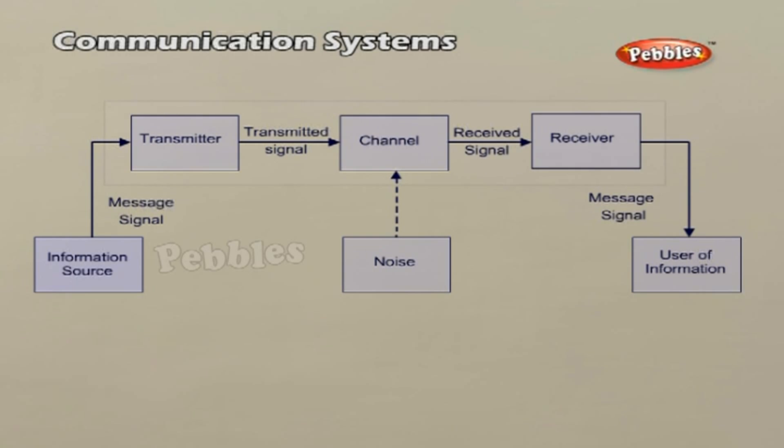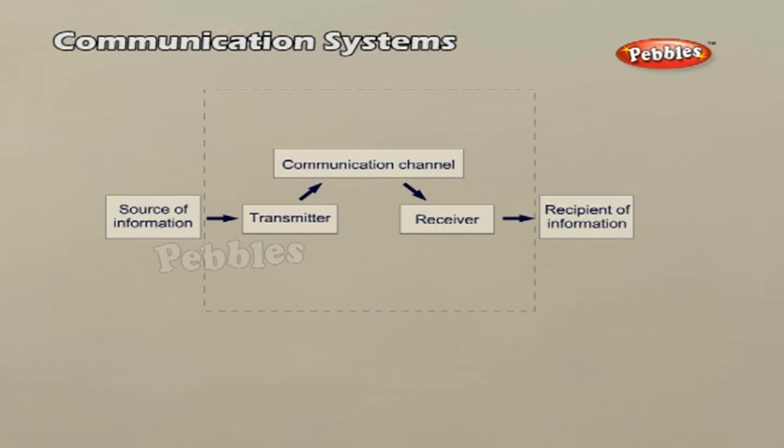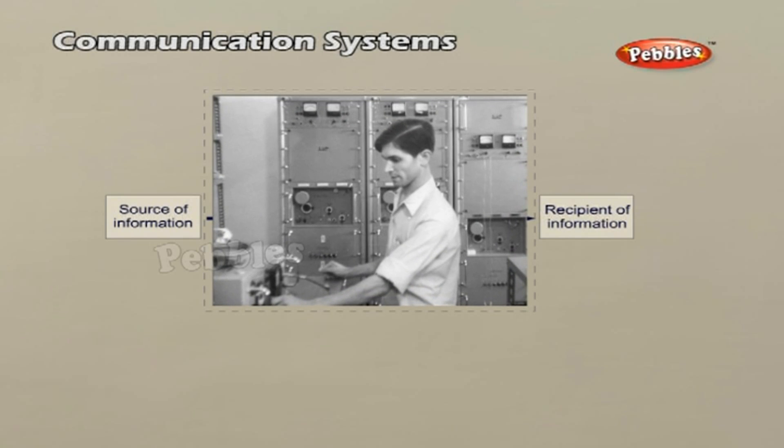In a communication system, the transmitter is located at one place, the receiver is located at some other place, and the channel is the physical medium that connects them. Depending upon the type of communication system, a channel may be in the form of wires or cables connecting the transmitter and the receiver, or it may be wireless.